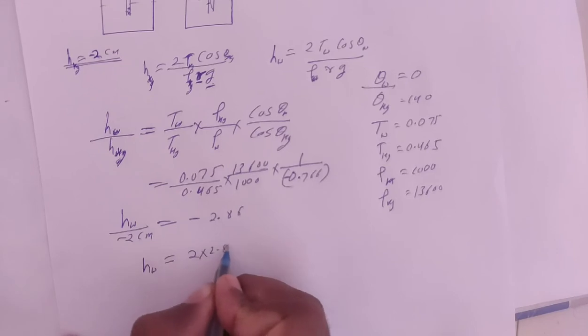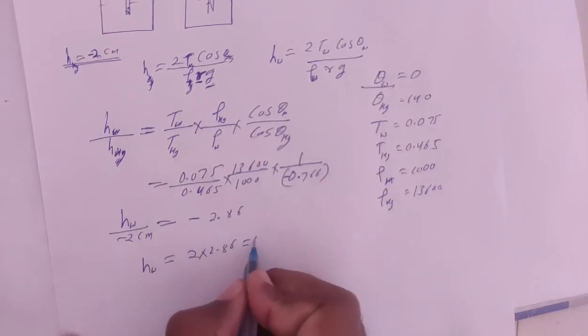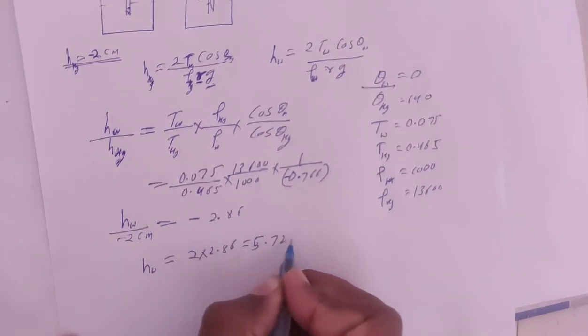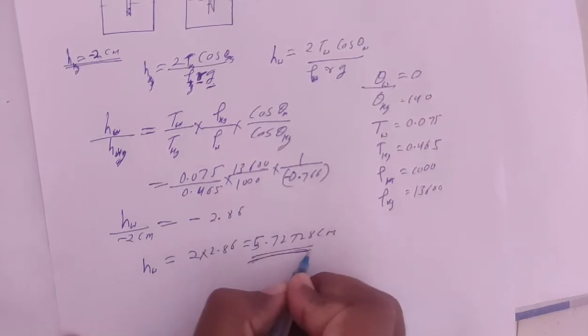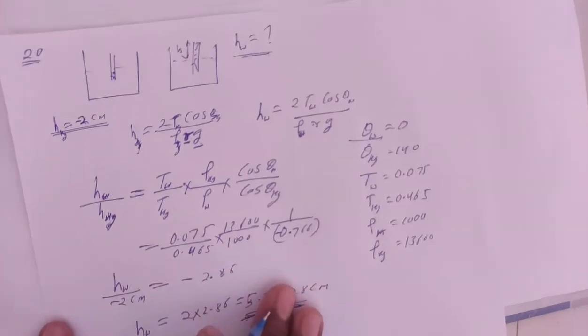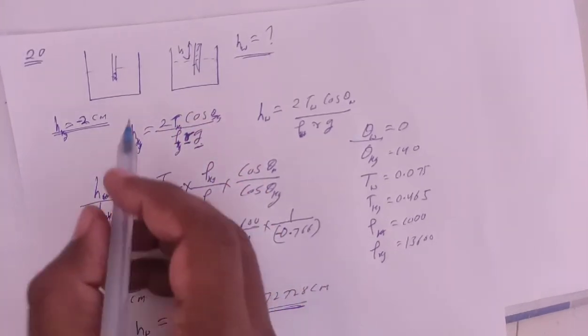Water column height equals 2 times 2.86, which gives 5.72 centimeters. This is the water column height. It's positive, meaning water is going upward, and negative means downward.